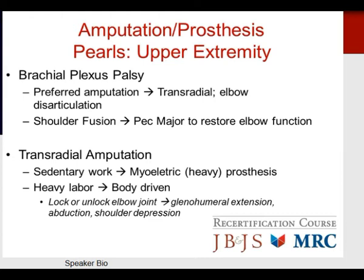Recap pearls on amputations and prostheses — upper extremity: for brachial plexus palsy, preferred amputation is transradial or elbow disarticulation. For shoulder fusion, the pectoralis major is used to restore elbow function. With transradial amputations, sedentary work is possible with a myoelectric prosthesis, though these are heavy. Heavy laborers benefit better from a body-driven prosthetic. The elbow joint is locked or unlocked with glenohumeral extension, abduction, and shoulder depression motion.